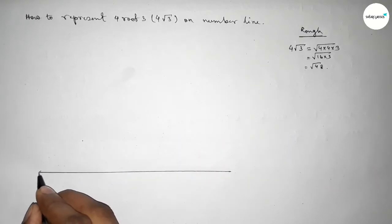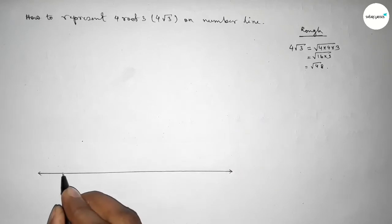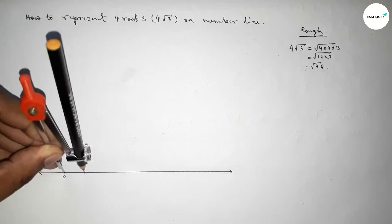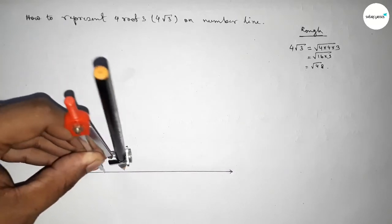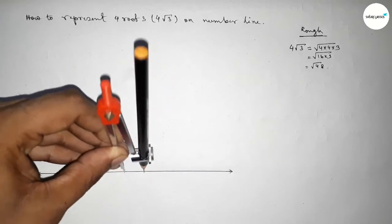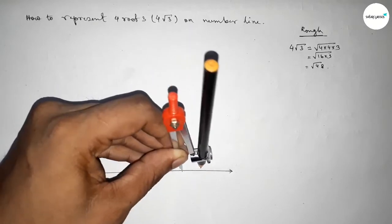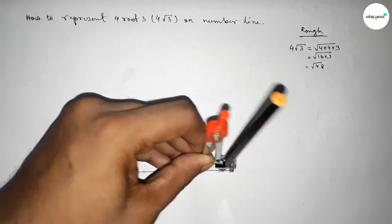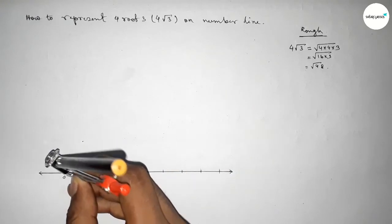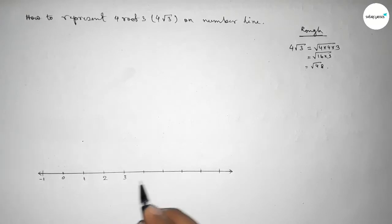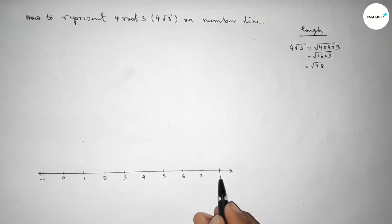Drawing a line of any length and taking arrow marks on both sides, and taking a starting point zero. Now by using a compass, taking any length and marking the numbers on the line. You can also use a scale to mark the numbers, and this length is called one unit length. Marking points: -1, 1, 2, 3, 4, 5, 6, 7, 8.